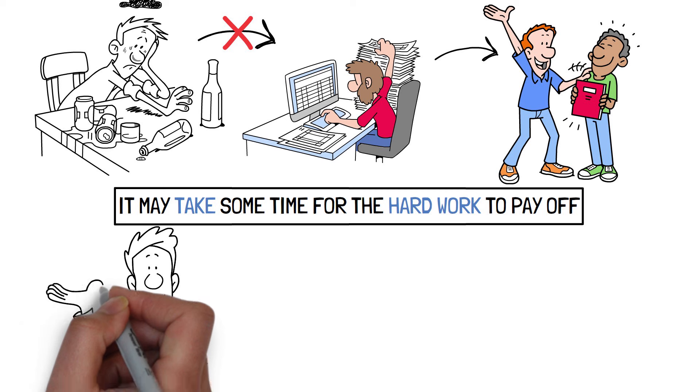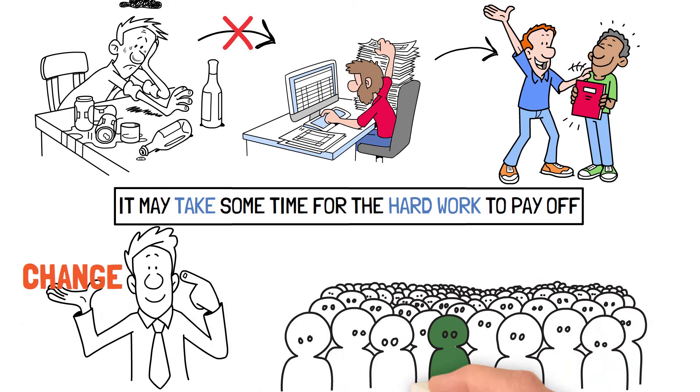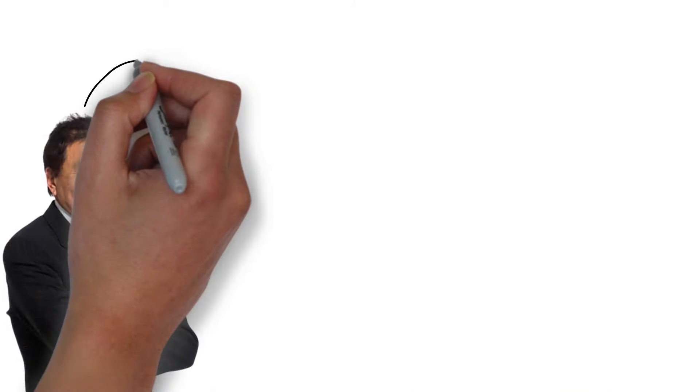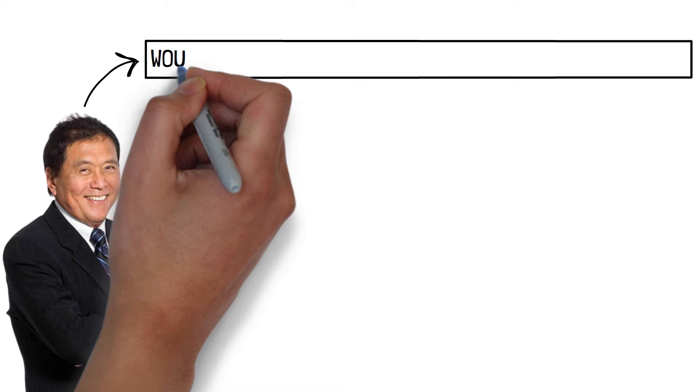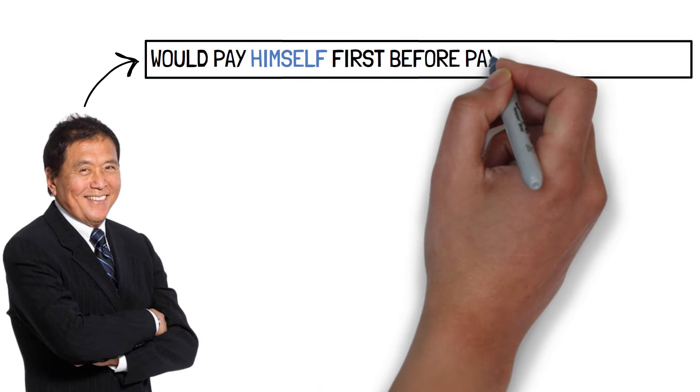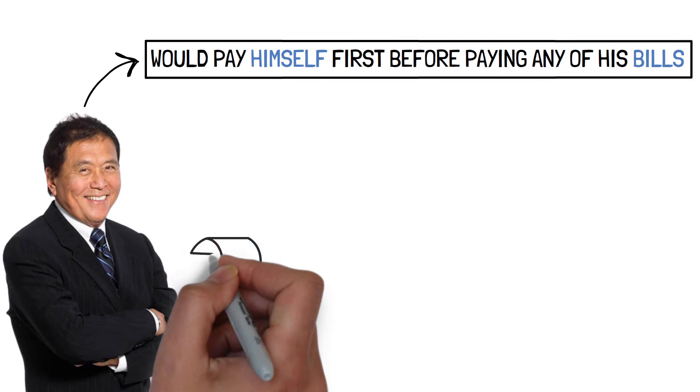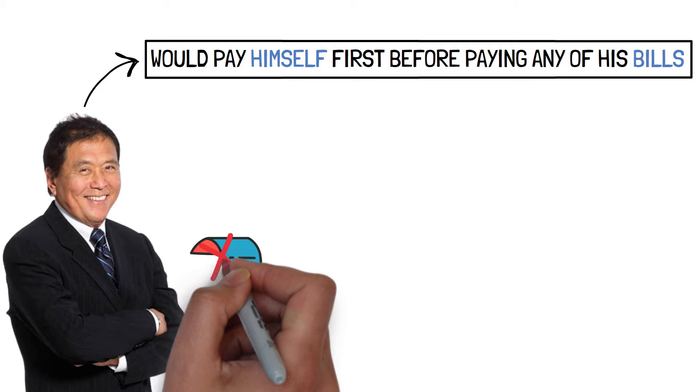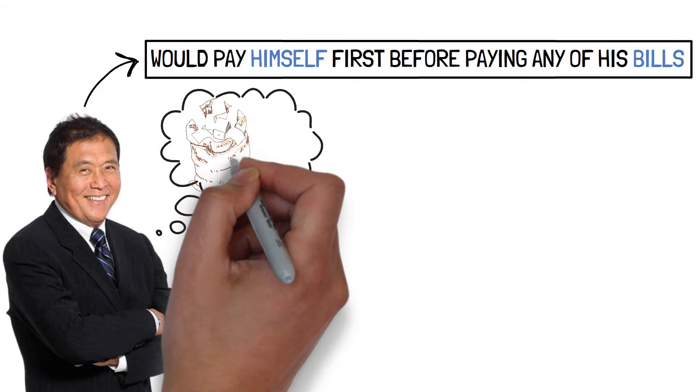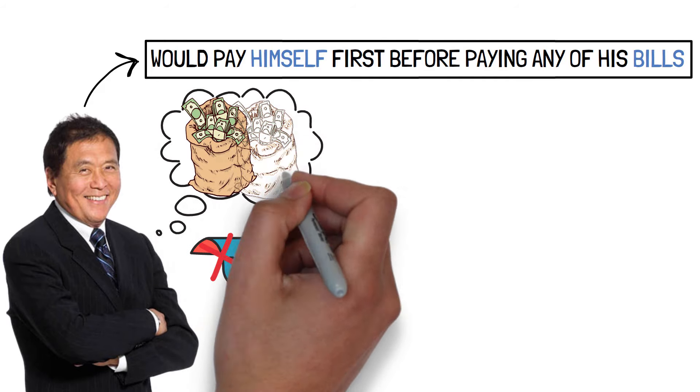Change your way of thinking. To be successful, you must think differently than others. Before he became affluent, Kiyosaki would pay himself first before paying any of his bills. As a result, he had nothing left over to pay his responsibilities, forcing him to think outside the box in order to make ends meet.